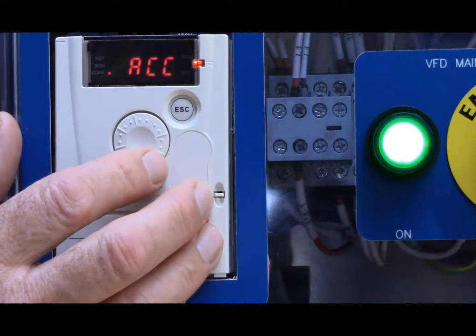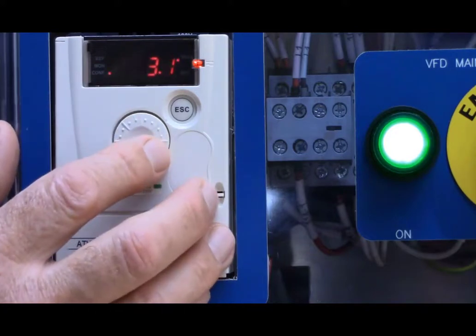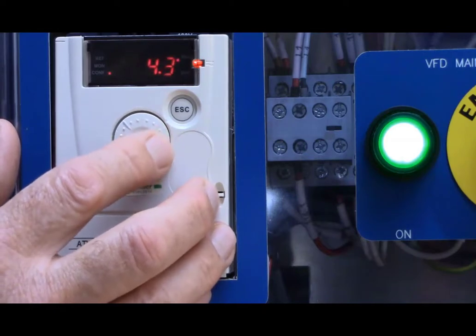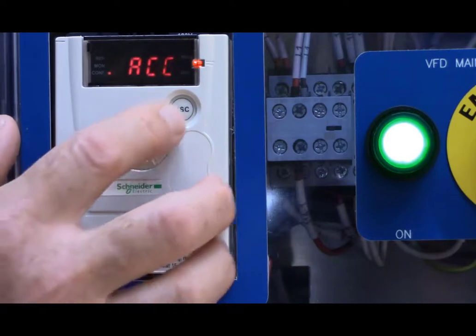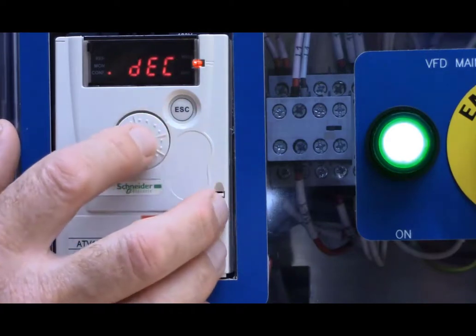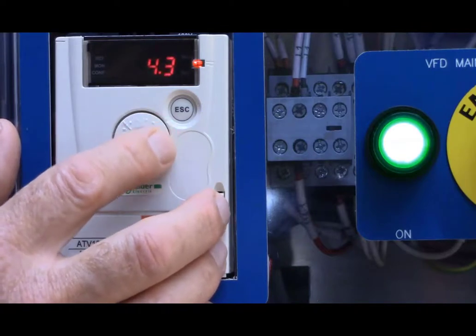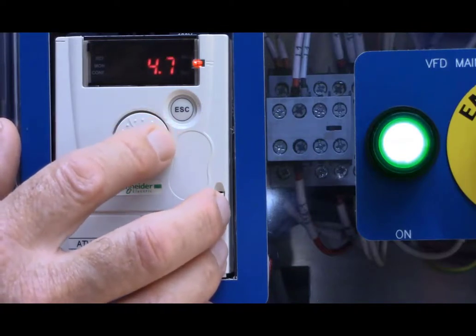And the next parameter down is your frequency reference. We're just going to leave that. The default is analog input 1. So, it'll look at this potentiometer for a speed reference. And let's go to the next one, acceleration, 3 seconds. We'll just change that to 5 seconds. Next one down is deceleration. Again, I'll just change it to 5 seconds. We'll save a little bit of energy ramping up and down.